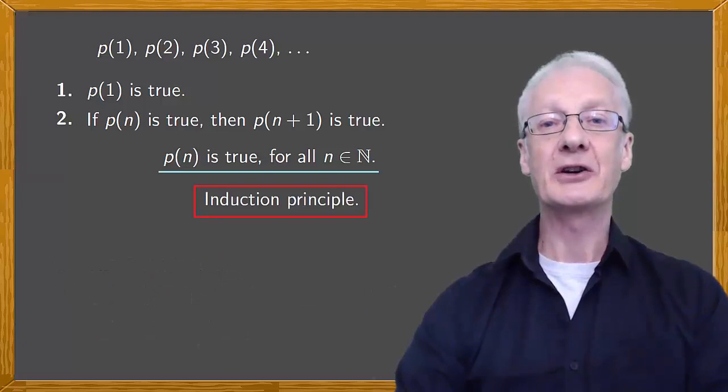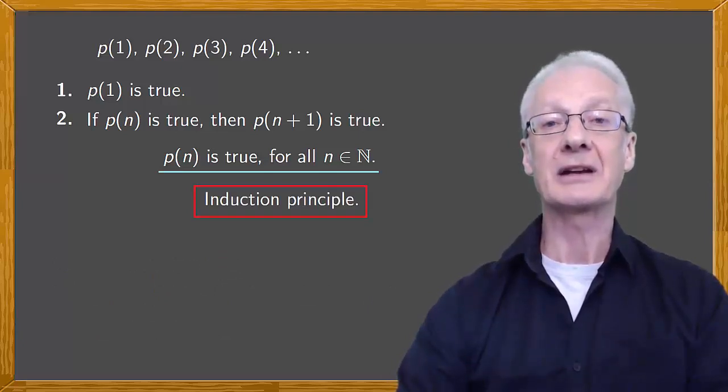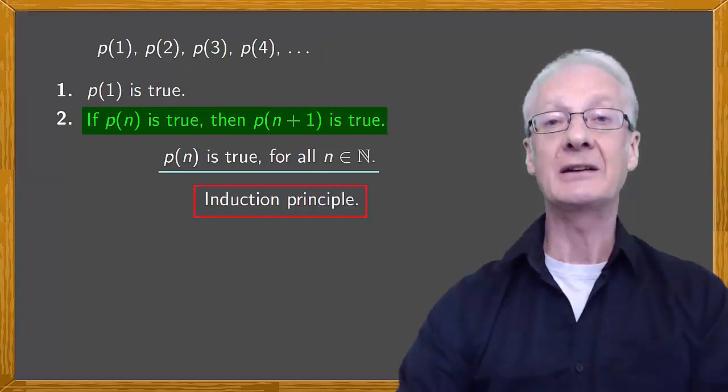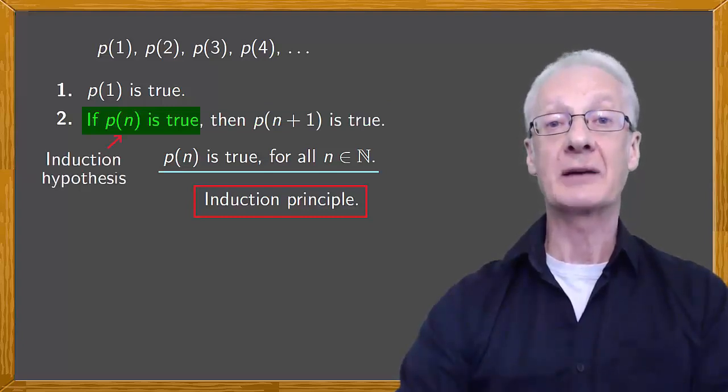This is the principle of induction, and it's a very powerful tool for demonstrating certain mathematical results. We can invoke it to demonstrate a set of properties associated with natural numbers. All we need to do is show that the first is true, and that if the property is true for n, it's also true for n plus one. The assumption that the property is true for n is called the induction hypothesis.